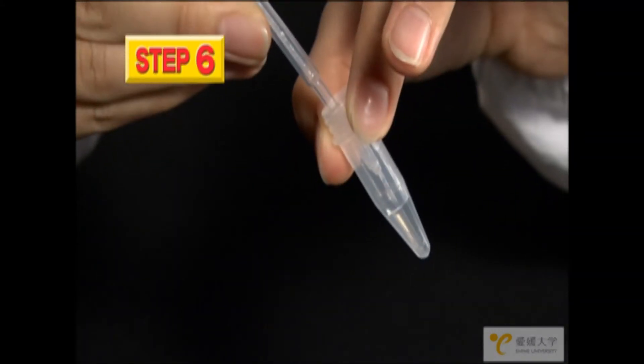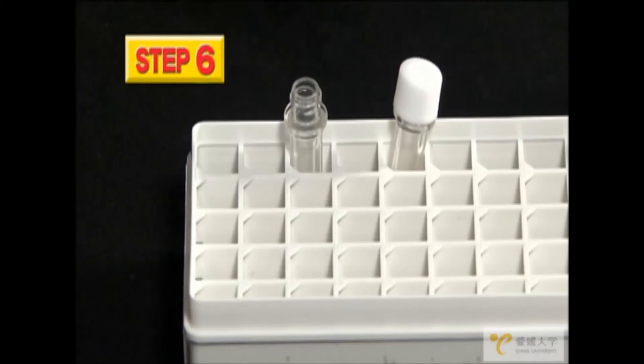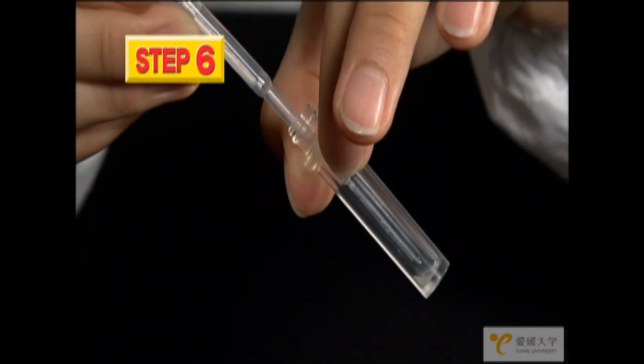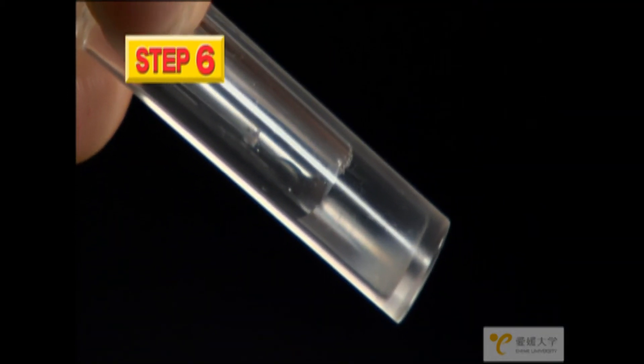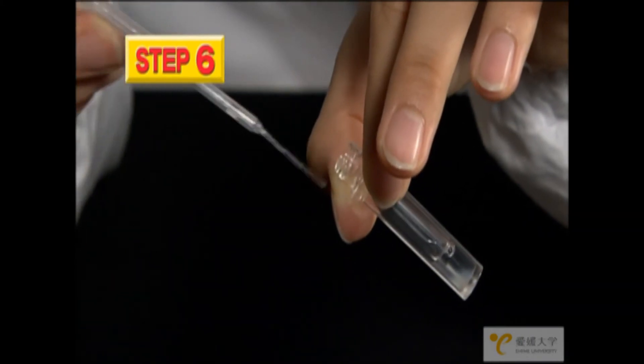Use the dropper to collect the liquid in the remaining tube with the blue cap and, as before, very carefully expel the liquid into the large tube so that the two liquids do not mix, creating two layers. The bottom layer will be white.